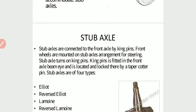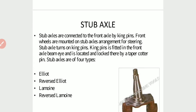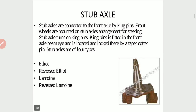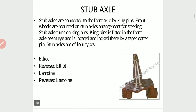Stub axles are connected to the front axle by a kingpin. Front wheels are mounted on stub axles as part of the steering arrangement. Stub axles turn on the kingpin. The kingpin is fitted in the front axle beam and is located and locked there by a taper cotter pin. Stub axles are of four types: Elliot, reverse Elliot, LeMoyne, and reverse LeMoyne.